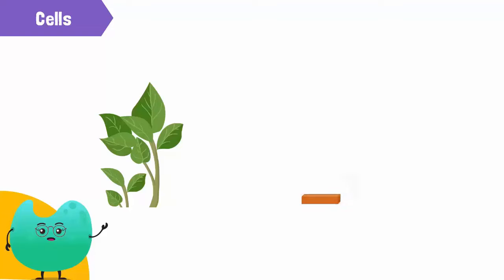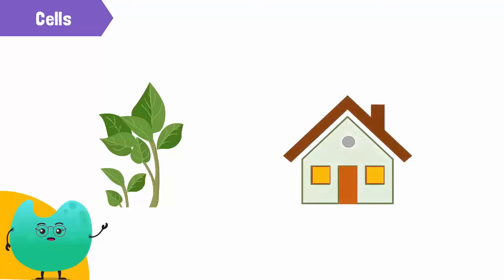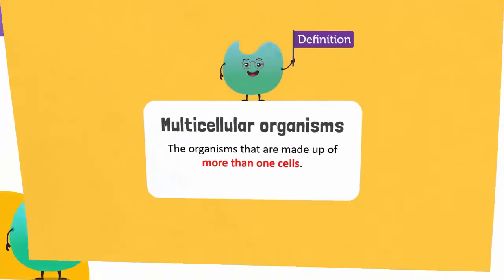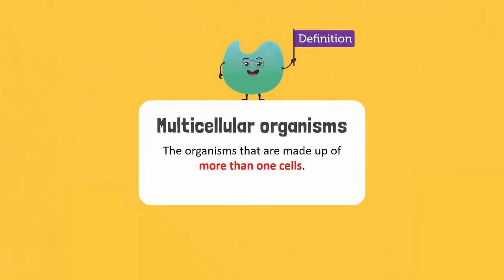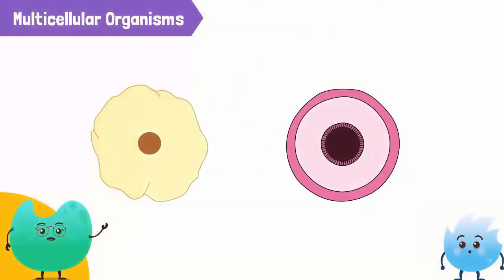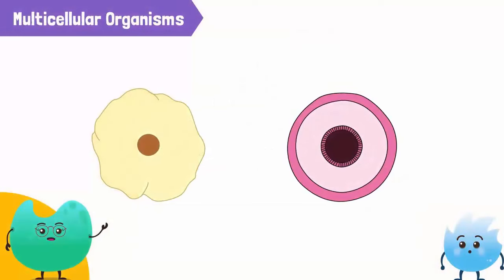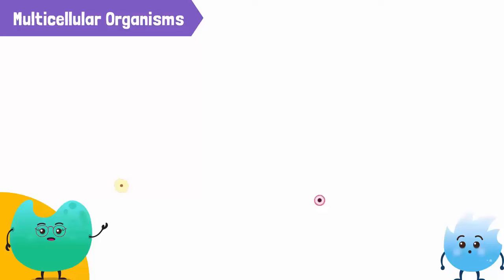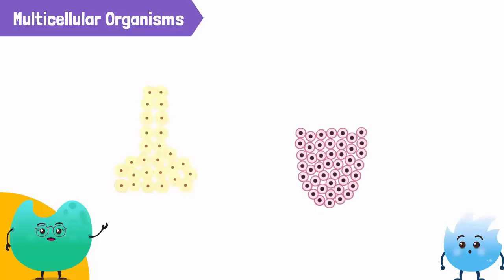Organisms that are made up of more than one cell are called multicellular organisms. Different types of cells have different functions. Many cells of the same type come together to perform the same function in a body.